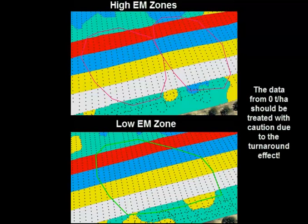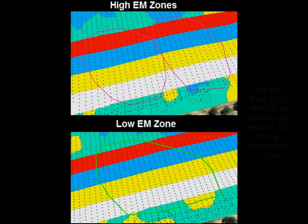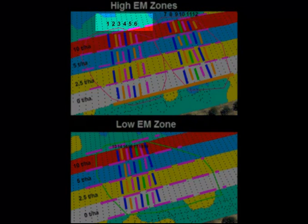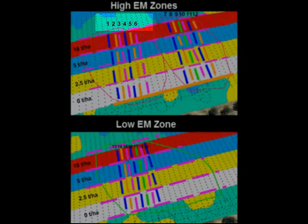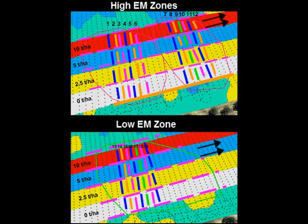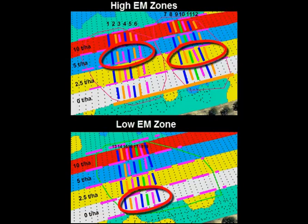The results from the 0 tonne per hectare application strip need to be treated with caution. In the analysis of trials laid out in this format, we will be using a number of run lines in the data analysis. When running parallel with the run lines, we generally only get two run lines of extraction, and any run effect will affect the outcome significantly. While run effects may be present in this trial, their effect will not be as significant because we are extracting six to seven run lines per treatment zone.